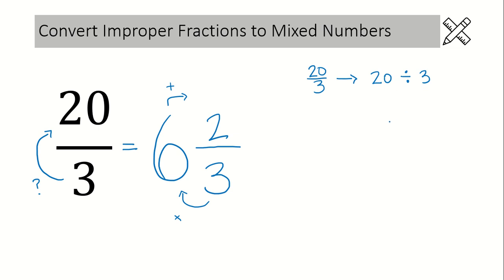So if we have 20 divided by 3 and we want to use long division, we could write it like this: 3 into 20. And then we go through our long division steps. 3 goes into 20 6 times. 6 times 3 is 18. And we have a remainder of 2.